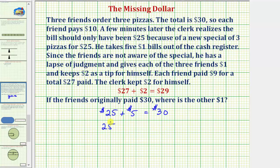So we have $25 plus $2 plus $3 still equals $30.